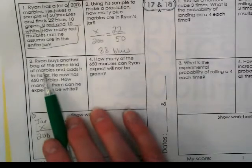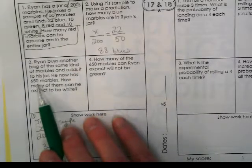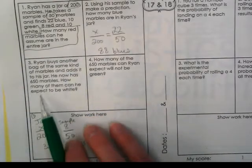Then the problem gets a little bit more complex, and this is why I really wanted to talk about it. Ryan buys another bag of the same kind of marbles and adds it to his jar. He now has 650 marbles. How many of them can be expected to be white?